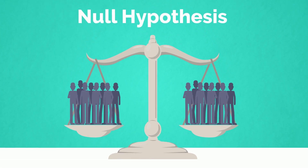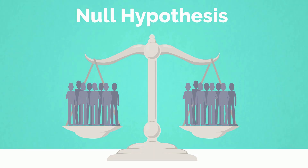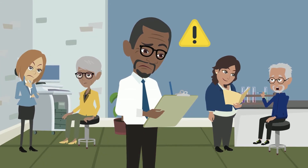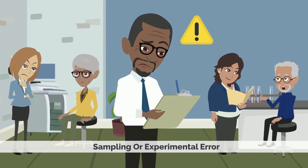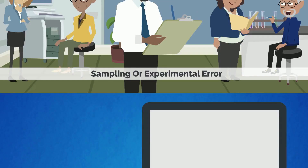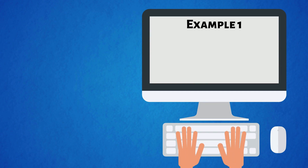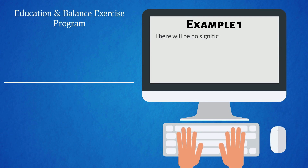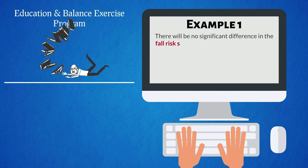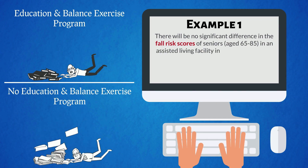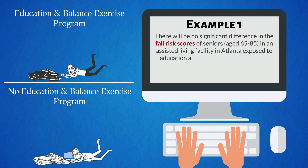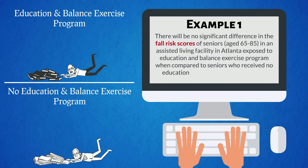Null hypothesis: in a statistical test, the null hypothesis states that there is no significant difference between specified populations. Any observed difference would be attributed to sampling or experimental error, or to chance. For example: there will be no significant difference in the fall risk scores of seniors aged 65 to 85 in an assisted living facility in Atlanta who received no education or balance exercise training.